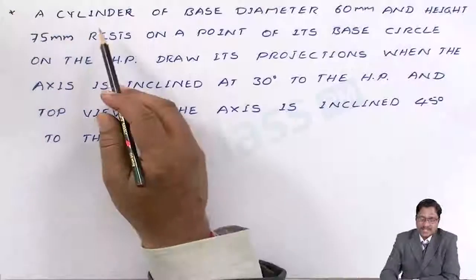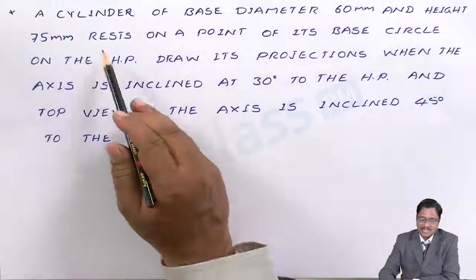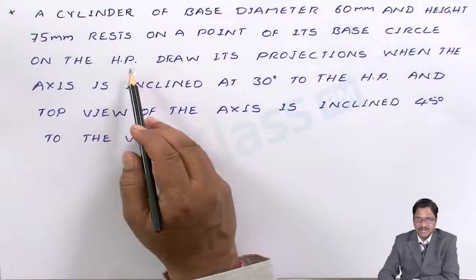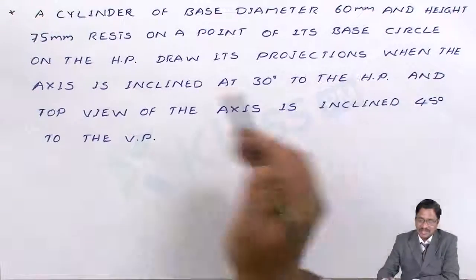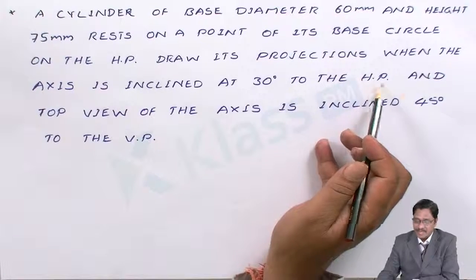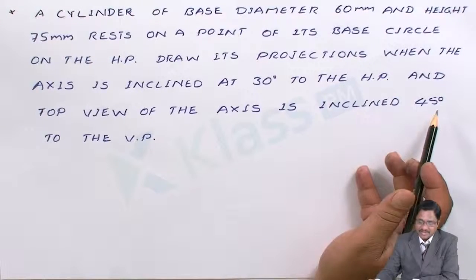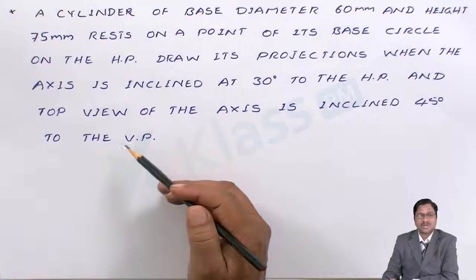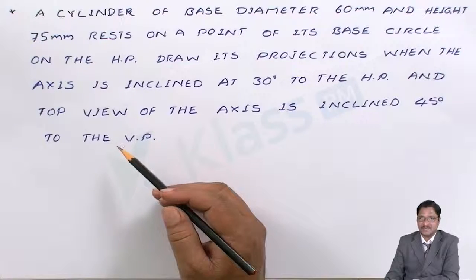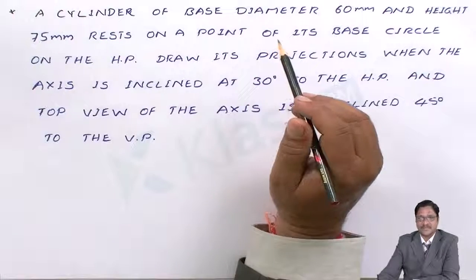Let me discuss another problem. A cylinder of base diameter 60 mm and height 75 mm rests on a point of its base circle on the HP. Draw its projections when the axis is inclined at 30 degrees to the horizontal plane and the top view of the axis is inclined 45 degrees to the vertical plane.